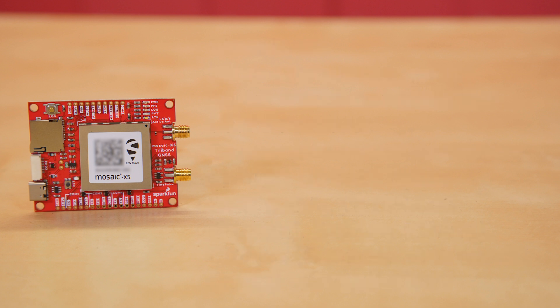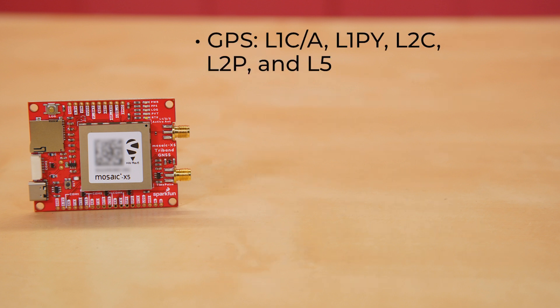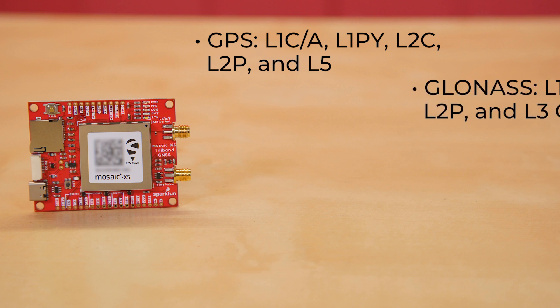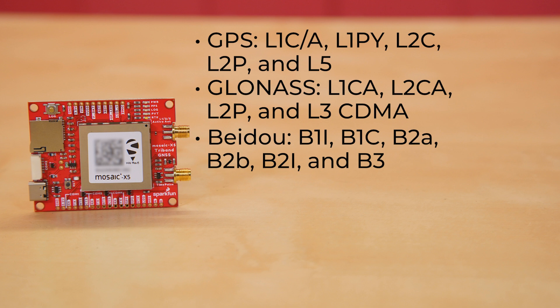But let's get more specific, constellation by constellation. In GPS it can read L1CA, L1PY, L2C, L2P, and L5. From GLONASS satellites, L1CA, L2CA, L2P, and L3CDMA. From the BEIDO constellation, B1I, B1C, B2A, B2B, B2I, and B3.